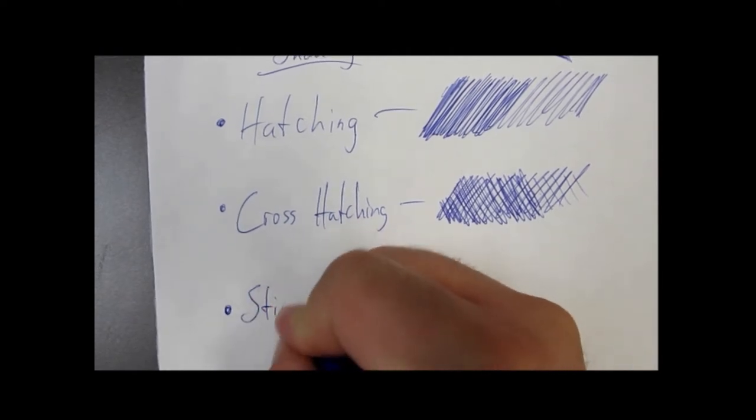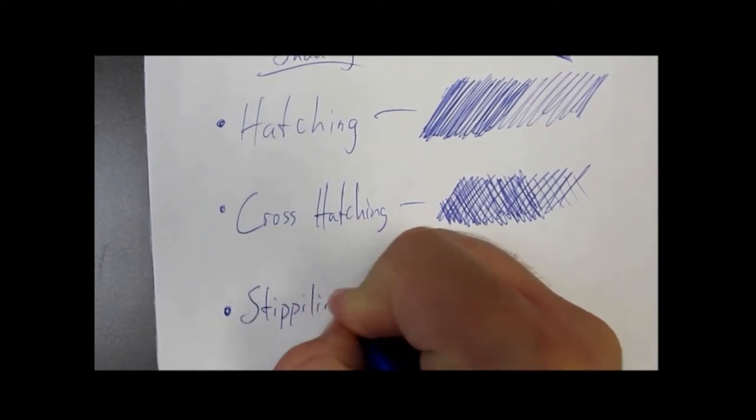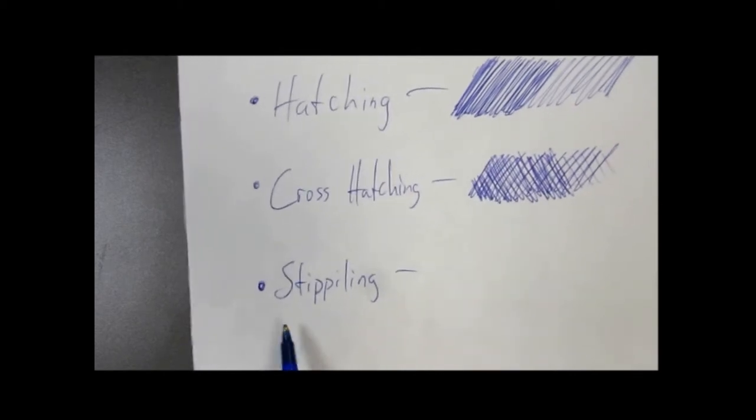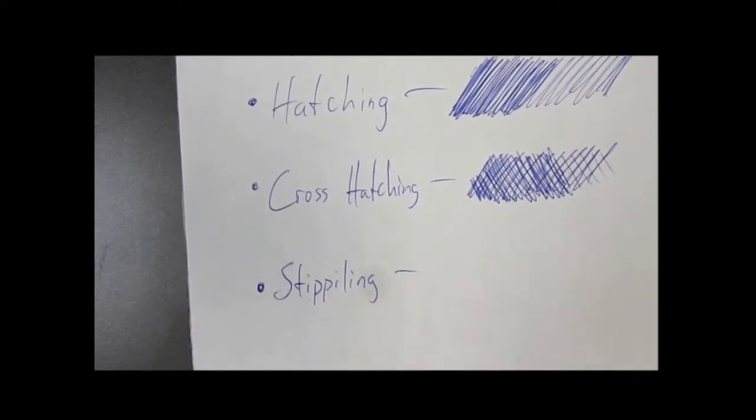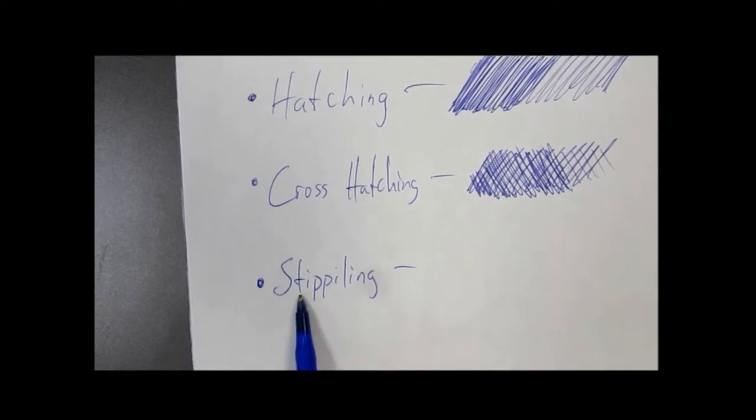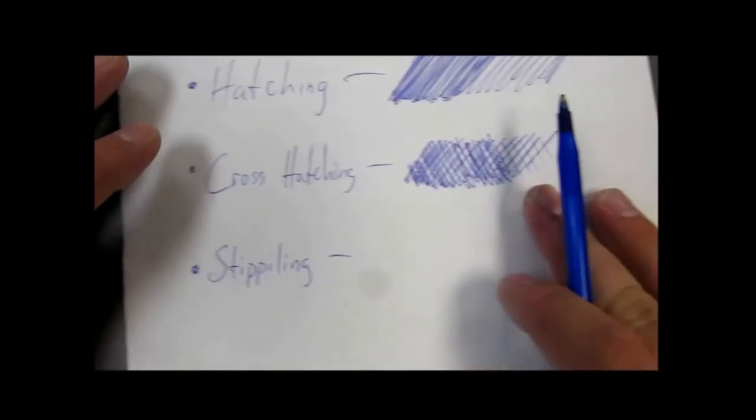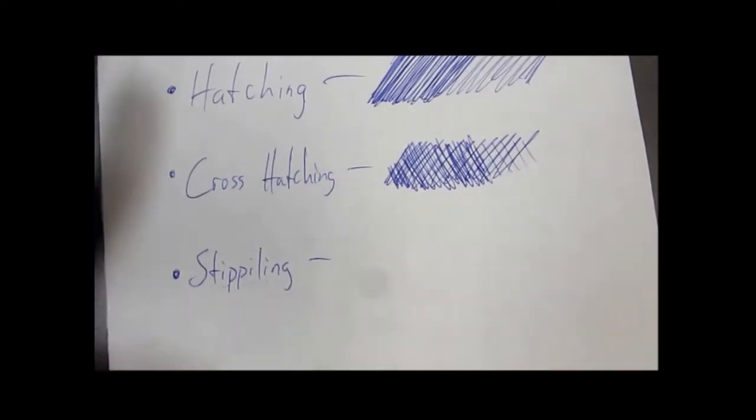That is stippling. Stippling is a series of dots laced over the paper to give lightness or darkness to the shadows you're trying to evolve in your image. The number one thing is you don't want to hear the pen as you're making it.